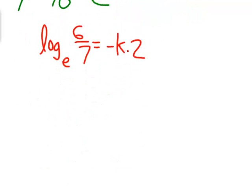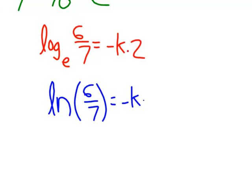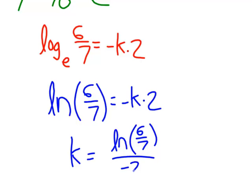Log base e is our special logarithm. Again, stop, pause, let this soak in if you need to. But this is, relate this to the stuff we've done recently. Remember, log base e is the same as ln. So, just write ln of 6 sevenths equals negative k times 2. And finally, get k by itself by saying k equals, let's divide both sides by negative 2. And I'll put ln of 6 sevenths over negative 2.